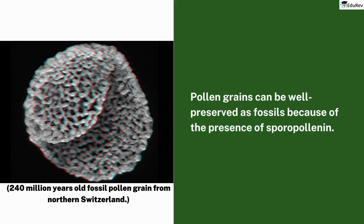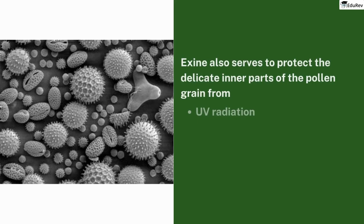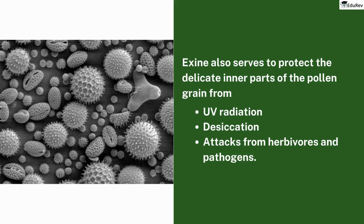Scientists can look at these fossils to learn about what plant species existed in the past. Additionally, the exine of pollen grains has a variety of patterns and designs, making them beautiful to look at. The exine also serves to protect the delicate inner parts of the pollen grain from various environmental stressors such as UV radiation, desiccation, and attacks from herbivores and pathogens. The presence of sporopollenin allows pollen grains to survive for hundreds and thousands of years and become well-preserved as fossils.